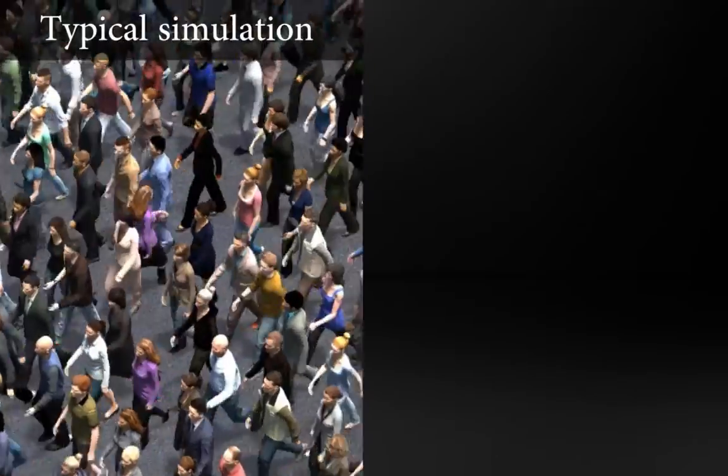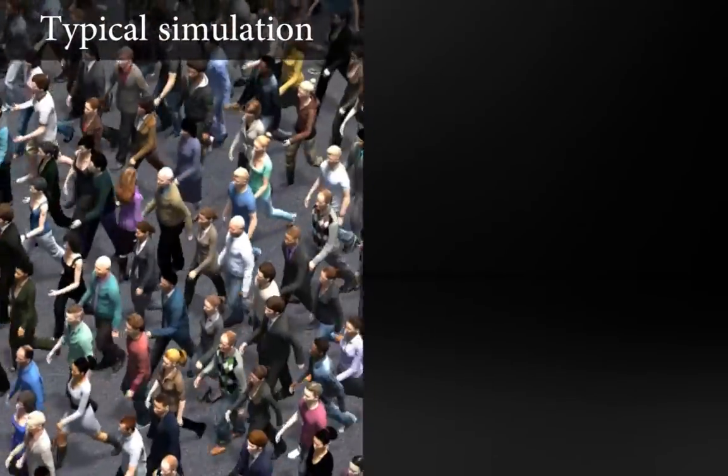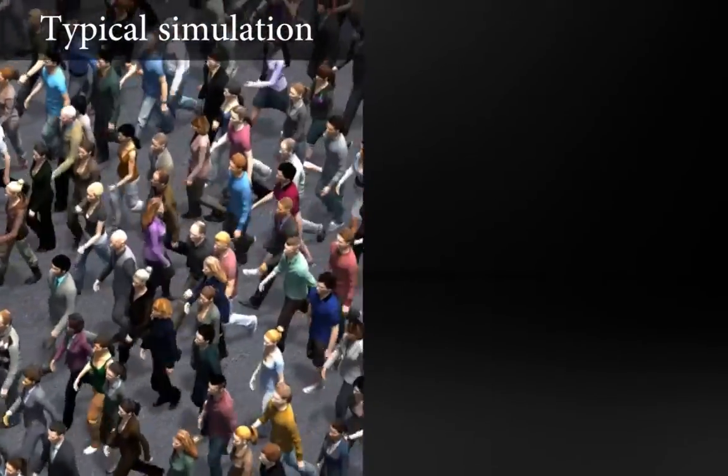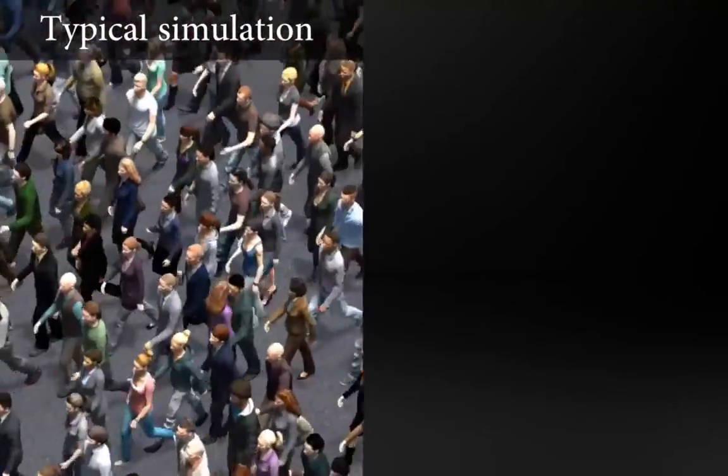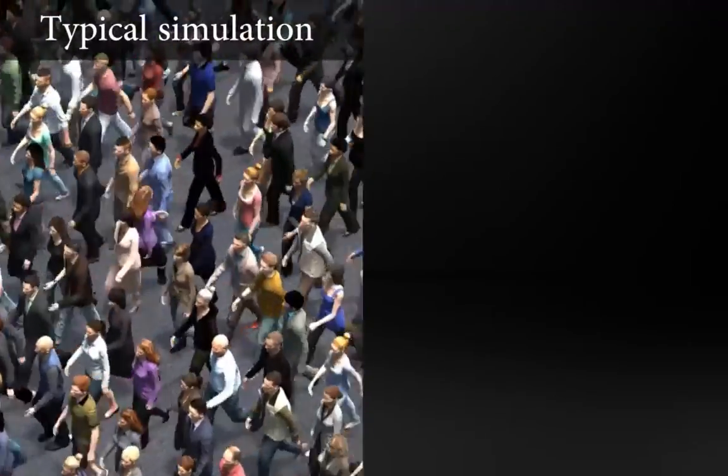In a typical crowd animation pipeline, residual collisions may occur between different parts of character bodies due to a separation between the computation of character trajectories and character body animations.